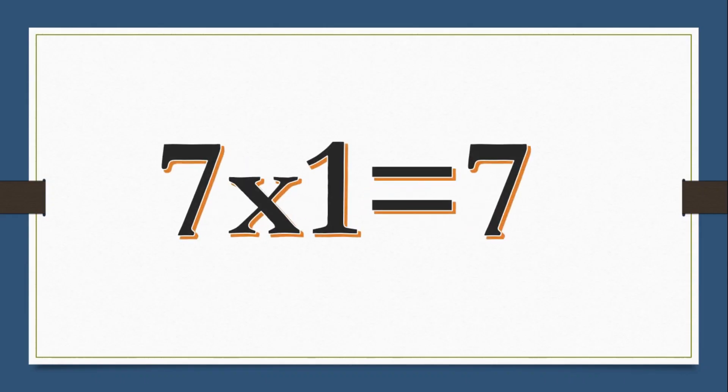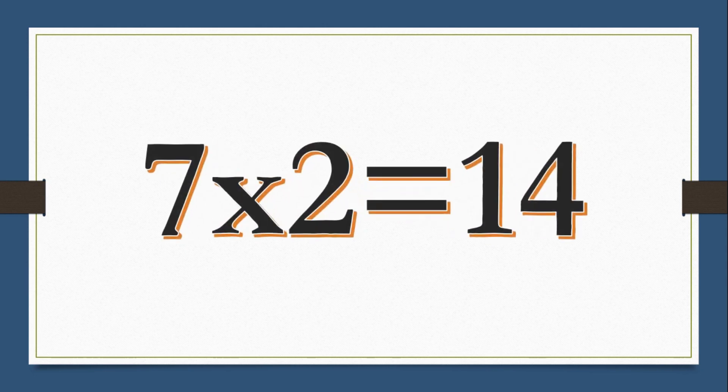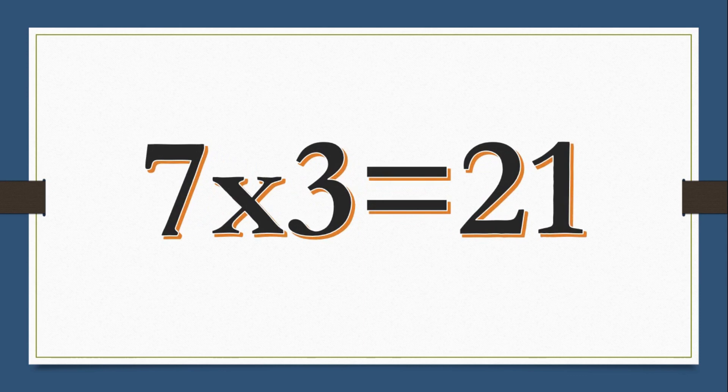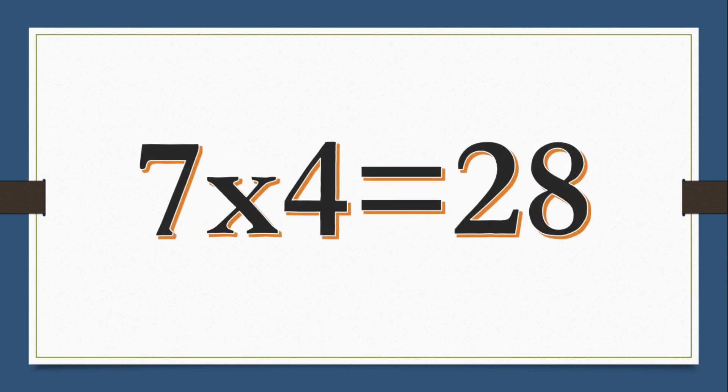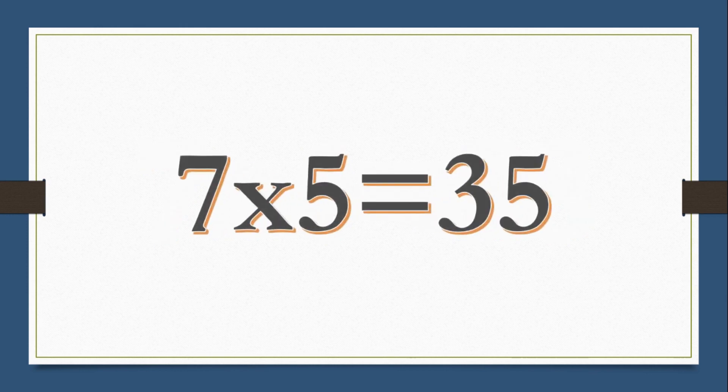7 1s are 7, 7 2s are 14, 7 3s are 21, 7 4s are 28, 7 5s are 35.